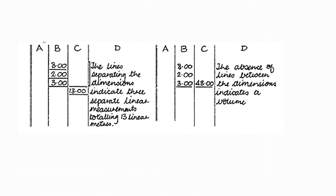A line separating dimensions indicates separate linear measurements totaling 13 linear meters. Whenever you underline dimensions, it means they are separated and should only be added, not multiplied. If there are no underlines, you multiply — assuming length, width, and depth — which gives an answer of 40.